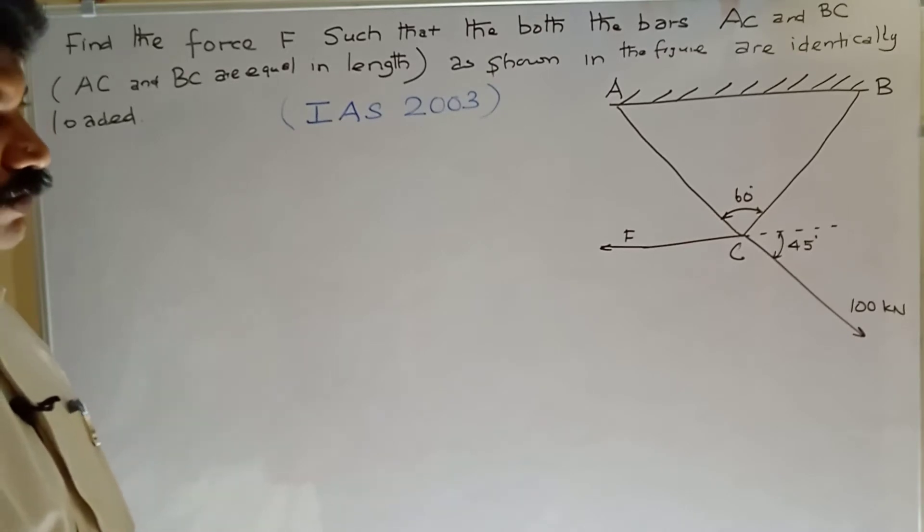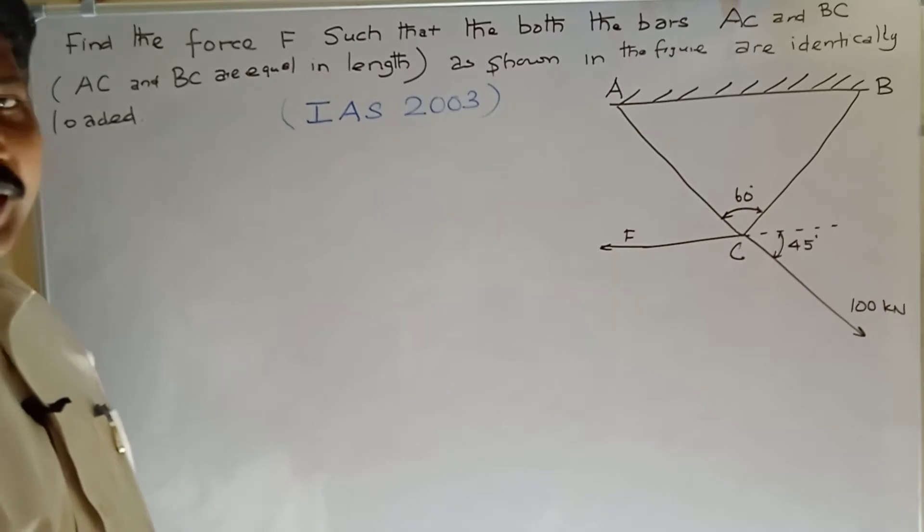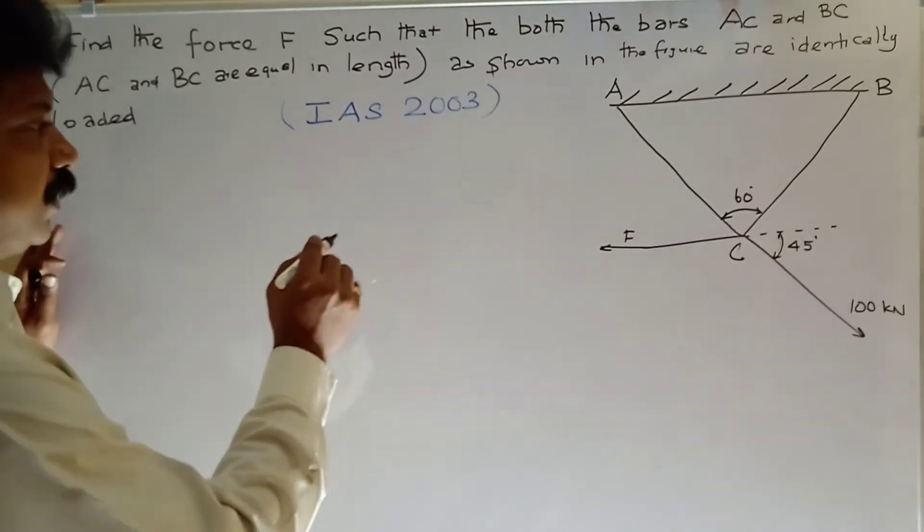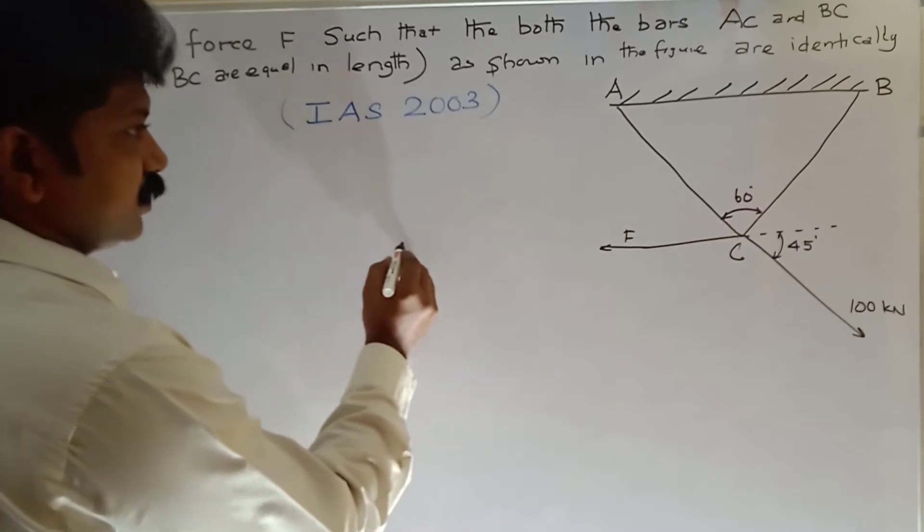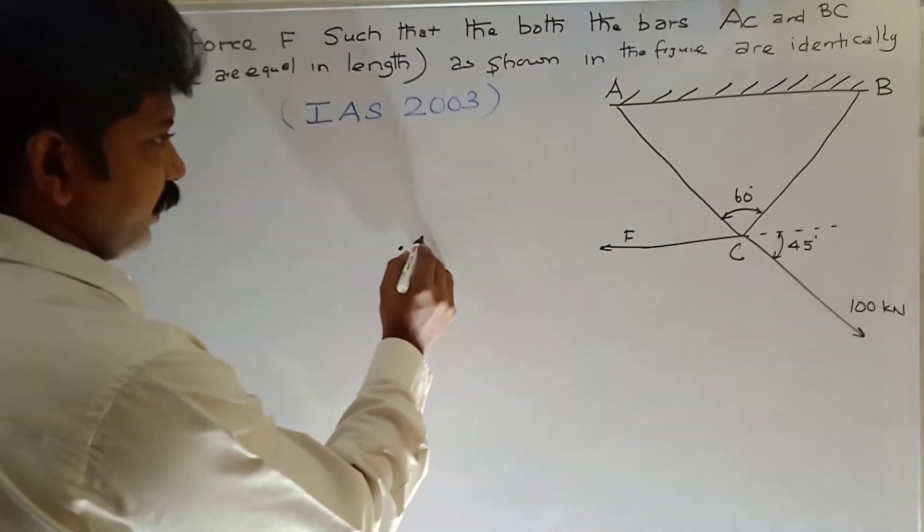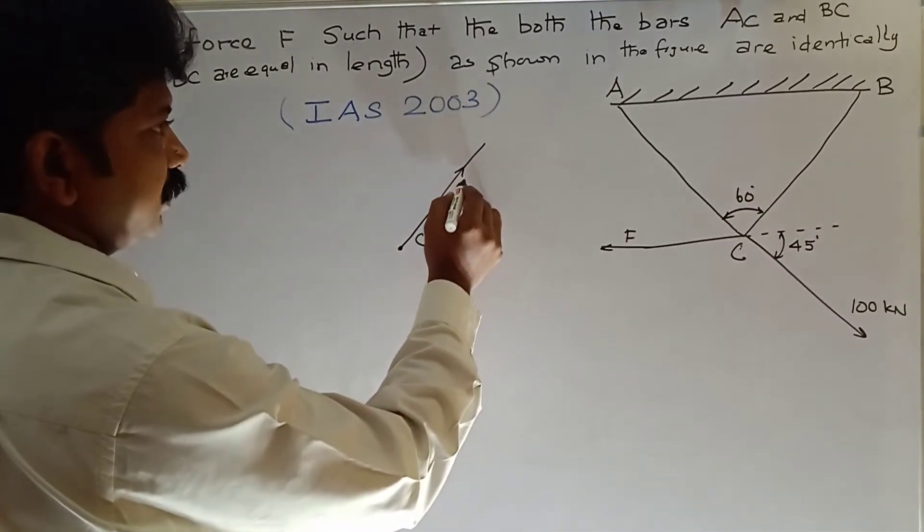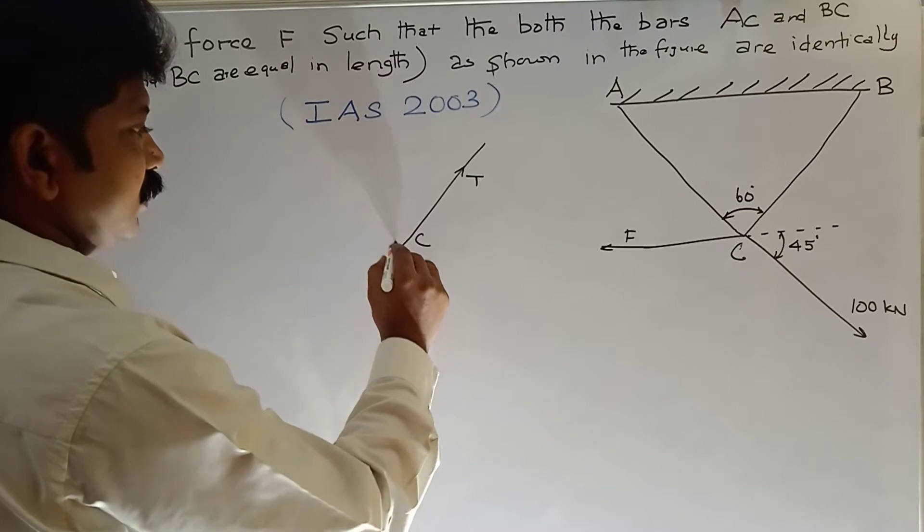AB is fixed load, and the force F is acting at point C. First, the free body diagram of the given question: point C, tension in bar BC, tension in bar AC.